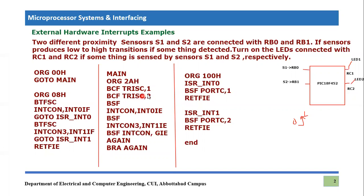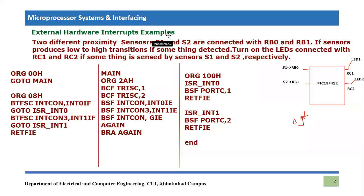At the main label, we originate at address 0x0A — this is our main task. The instructions BCF TRISC comma 1 and BCF TRISC comma 2 define those two pins as output pins. Next, we enable the individual enable bit of interrupt zero: BSF INTCON comma INT0IE, found in the interrupt control register. We also enable interrupt one: BSF INTCON3 comma INT1IE, found in INTCON3.